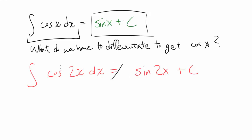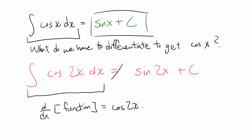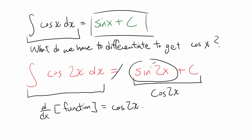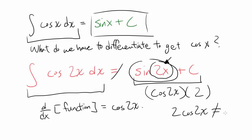How come it is not sine of 2x? This question is asking: what do we have to differentiate to get cosine of 2x? Let's check if sine of 2x plus C works by differentiating sine of 2x. Using the chain rule, you get cosine of 2x, but you also have to multiply by the derivative of 2x, which is 2. So the derivative of sine of 2x plus C is 2 times cosine of 2x — not cosine of 2x. The assumed answer was incorrect.